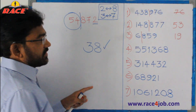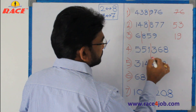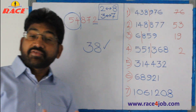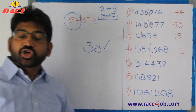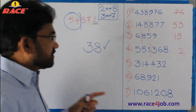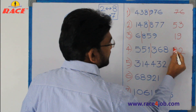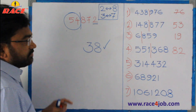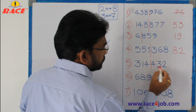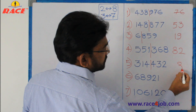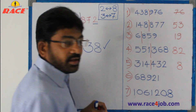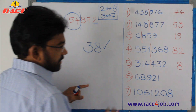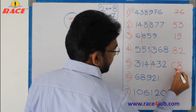Next one: divide here — right side ends with eight, so eight means two comes. The left side part is 551. 551 is between eight cube (512) and nine cube (729). The smaller is eight. So 82 is our answer. Next one: divide — right side ends with two, so two means eight comes. The left side part is 314, which is between six cube (216) and seven cube (343). The smaller is six. So 68 is our answer.